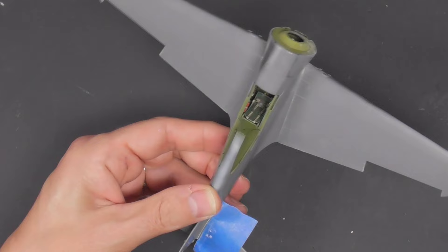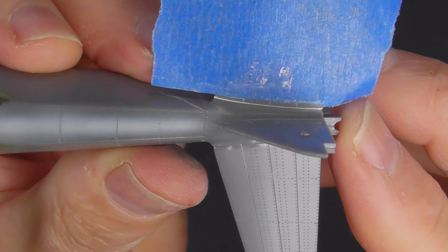I used a bit of Deluxe Perfect Plastic Putty—it's water-based. Put it on, let it dry, rub it off with a wet cotton bud.